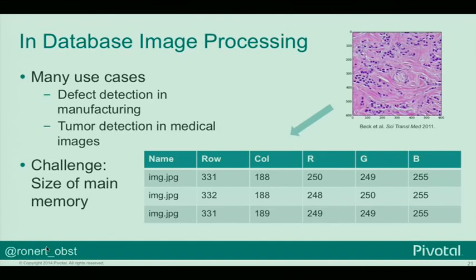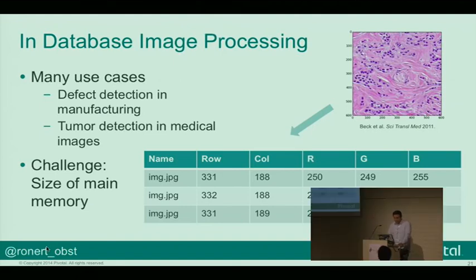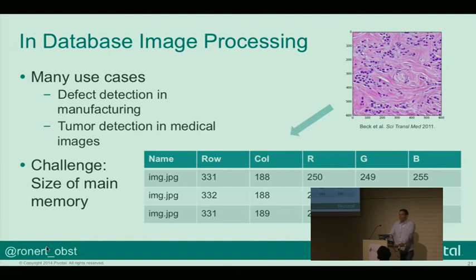What we see here on the right is an image of some cancerous breast tissue. She read many of these images into a database in a simple format: the leftmost column is the name of the image, then you store the row and column of a given pixel, and the last three columns are the intensity values of the red, green, and blue spectrum. It's quite an intuitive way of storing images in a structured format inside a database. This allows us to circumvent many traditional challenges of image processing — if you get a huge image from a satellite or medical imaging, they're often so large it's difficult to process in memory, especially when you have thousands or millions of such images. Putting them in a database and processing them in parallel really makes a lot of sense. There are also other use cases such as detecting malfunctions in manufacturing.